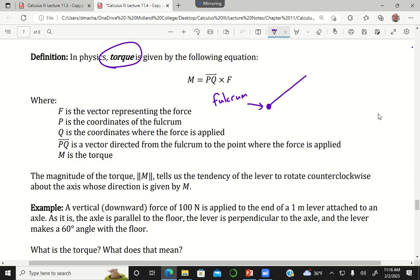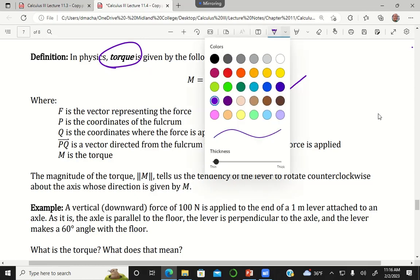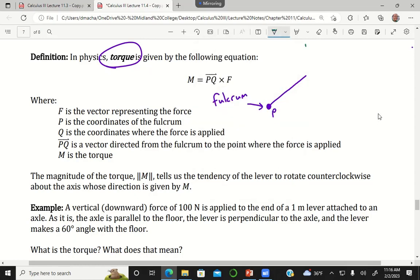I have this lever sticking out like this, and this is going to have coordinates P in space. If I decide to apply some kind of force to the end like this, I'm going to say this point where the force is applied has coordinates Q.